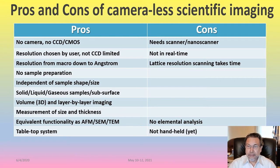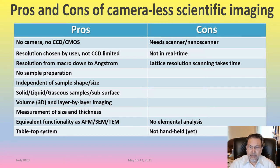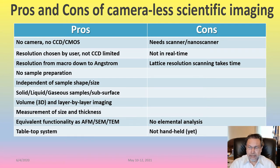The cons are that it needs a nanoscanner and it is not real time. Like a camera, you can see an image right away, but in this case we first have to digitize and then create the image. Lattice resolution scanning also takes time — a rough scan goes very fast, but if we need lattice scale resolution imaging, that fine scanning takes time.